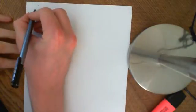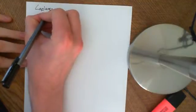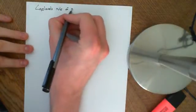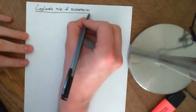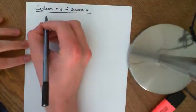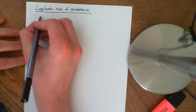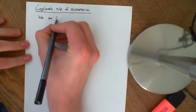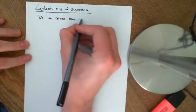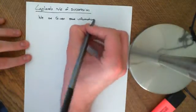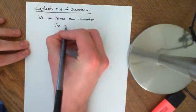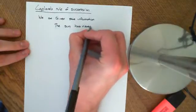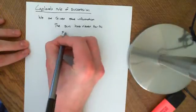Welcome to this video on Laplace's Rule of Succession. The problem that Laplace was considering, which gives rise to Laplace's Rule of Succession, is this: the specific information he had and wanted to analyse was that the sun has risen for the past, let's say, big N days.